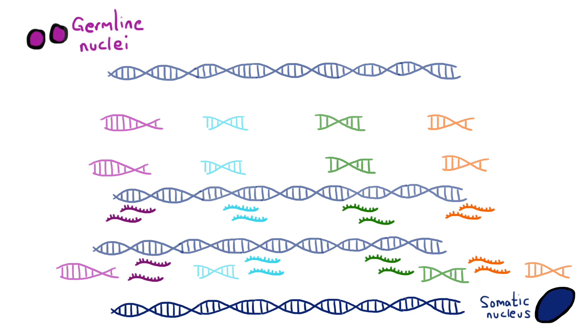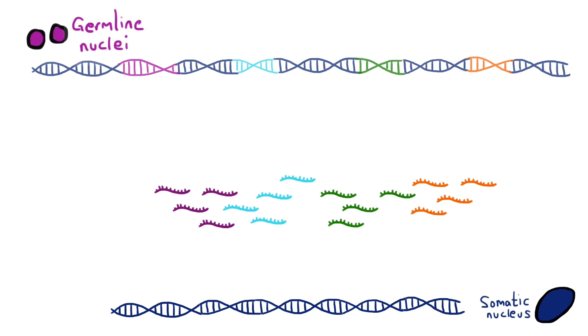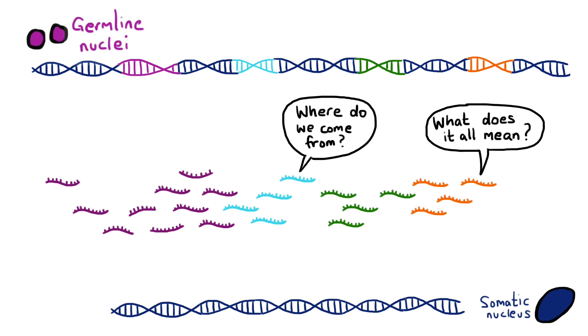We were interested in the production of these IES RNAs. They're known to be dicer-like enzyme products, which means they're formed from double-stranded RNA templates. However, where they come from, how they're transcribed, was unknown.